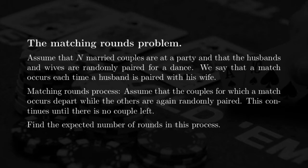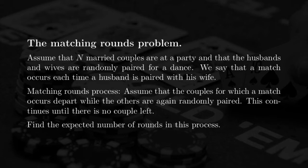More precisely, we start by defining something called the matching problem. We assume that we have n married couples at a party and you randomly pair husbands and wives. We assume that all n factorial possible permutations are equally likely, and we say that each time a husband is paired with his wife, a matching occurs for this couple. If we call x the number of matches in this process, then the main question is to find the probability mass function of this random variable x.